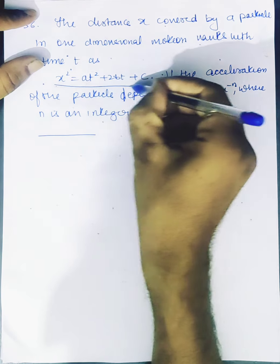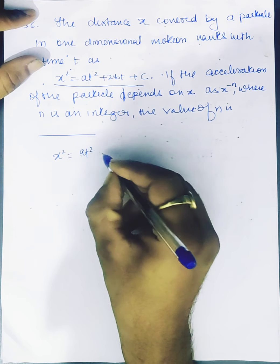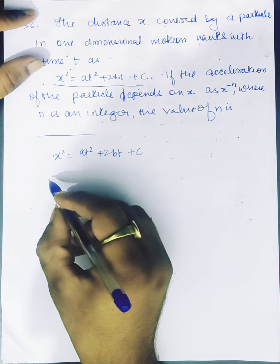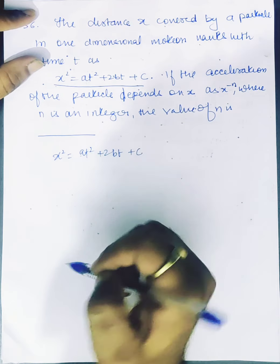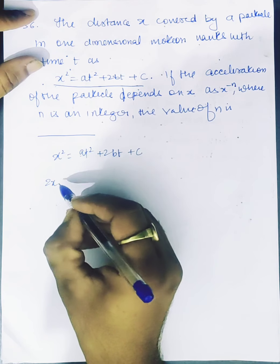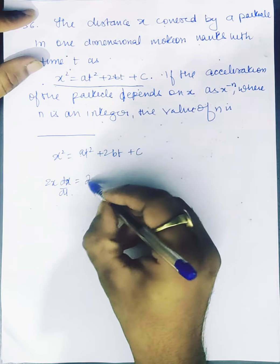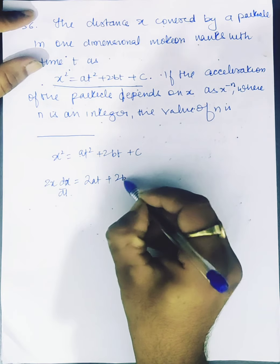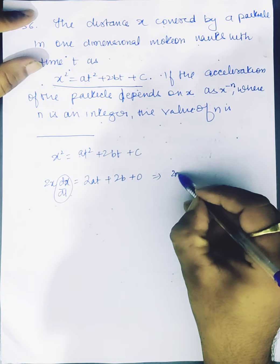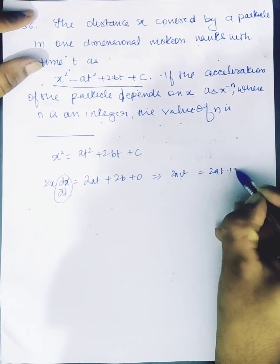We have to express acceleration in terms of x. Starting from x squared equals at squared plus 2bt plus c, we differentiate with respect to time. Differentiating the left side gives 2x times dx/dt. Differentiating the right side gives 2at plus 2b. So we get 2x·v equals 2at plus 2b.